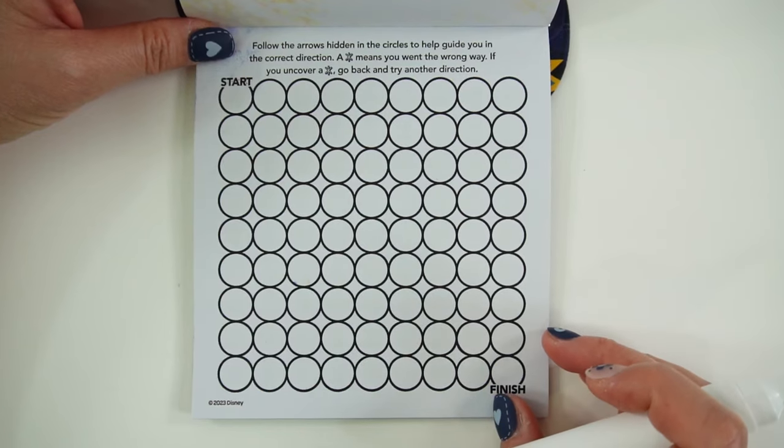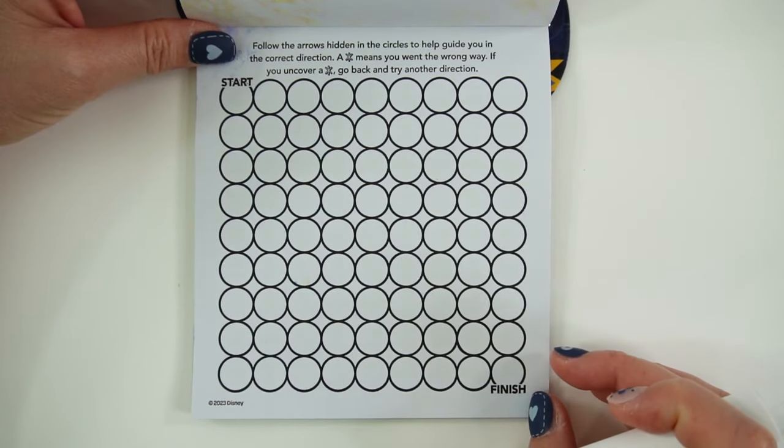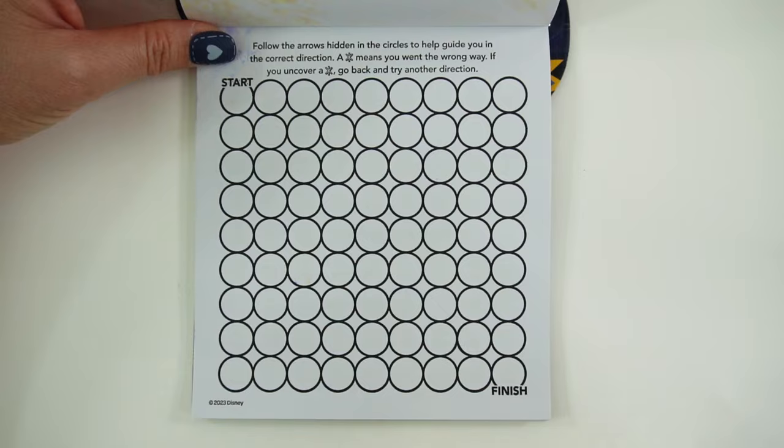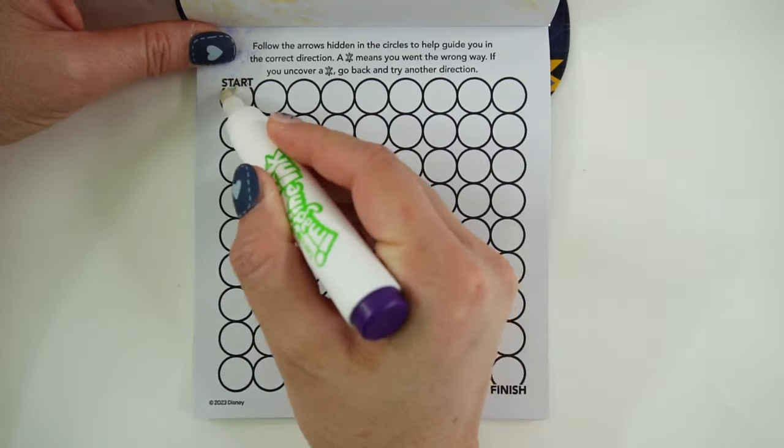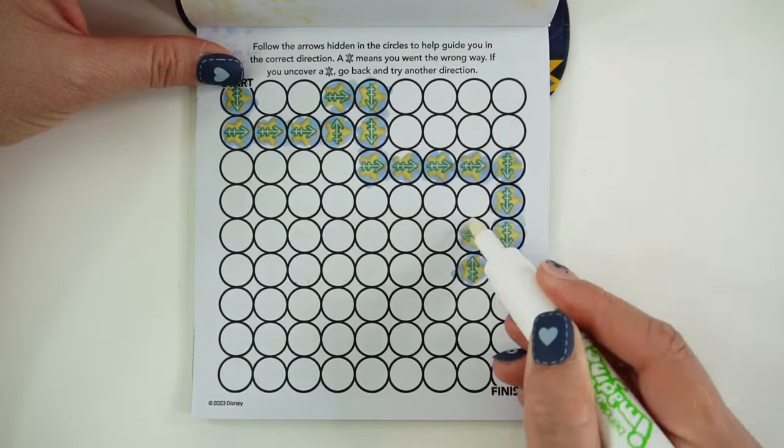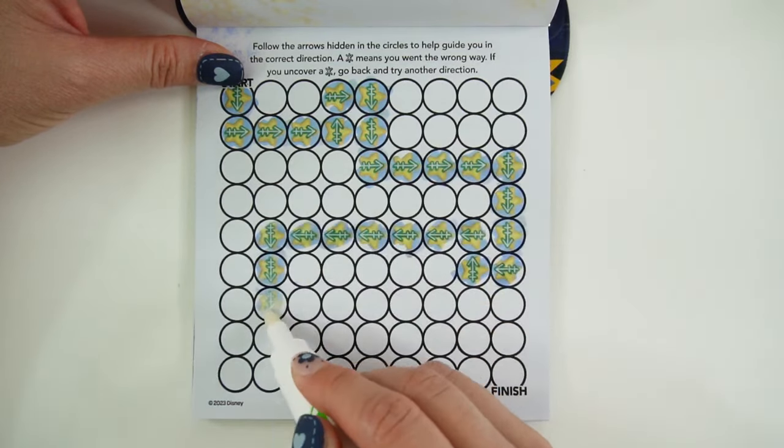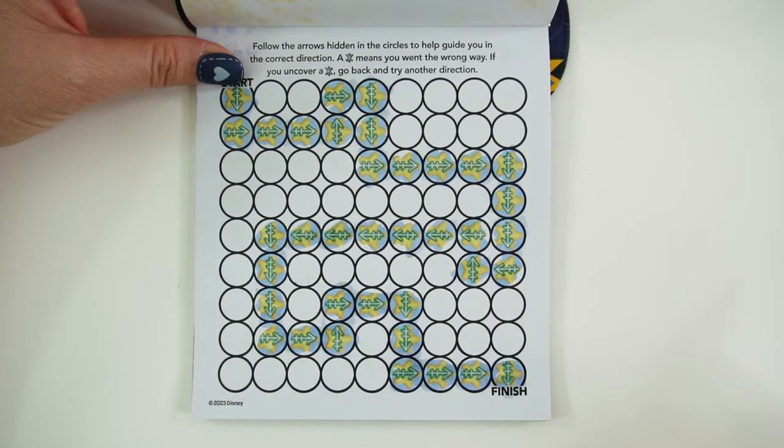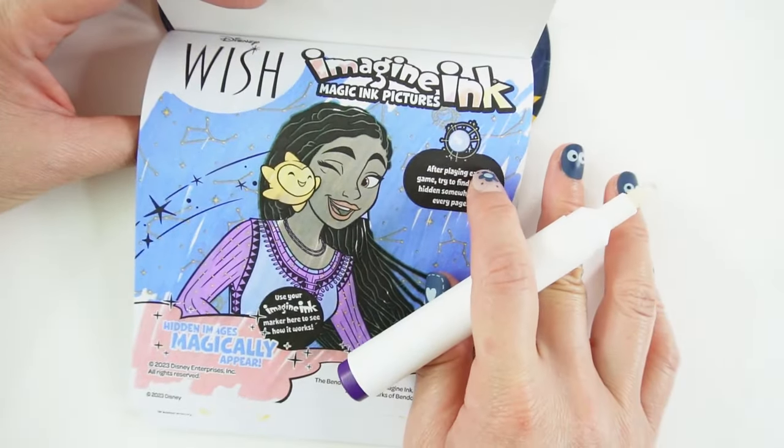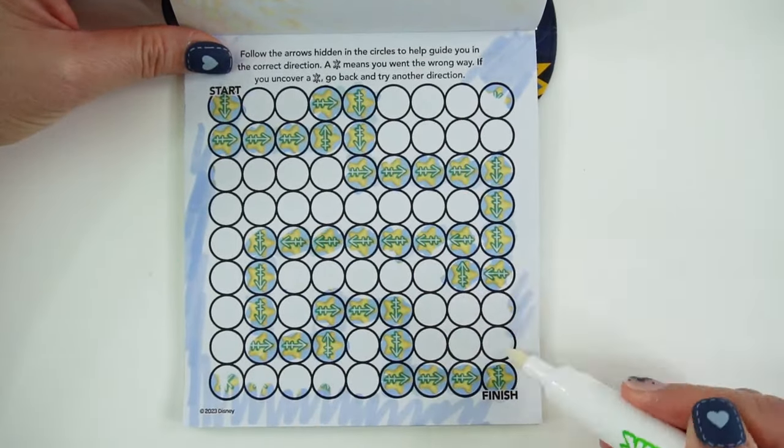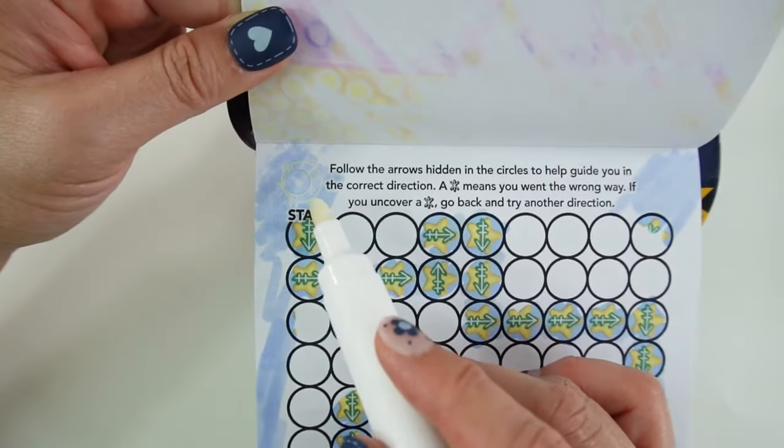On this page, it says, follow the arrows hidden in the circles to help guide you in the correct direction. A star means you went the wrong way. If you uncover a star, go back and try another direction. Let's start here. All right, we did it. And now we need to look for the wish. Oh look, there it is in the corner.